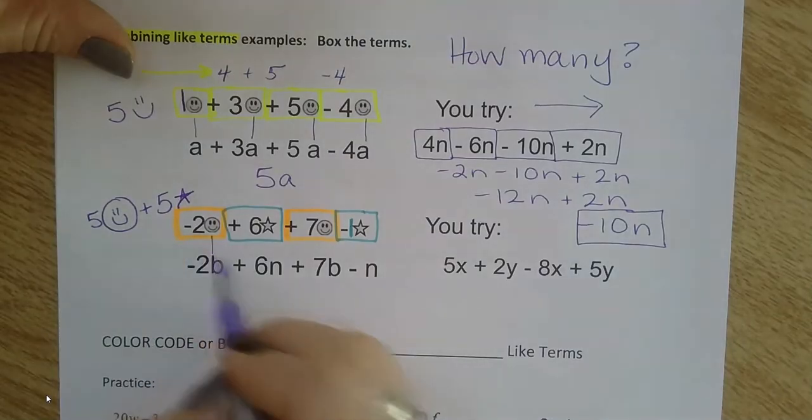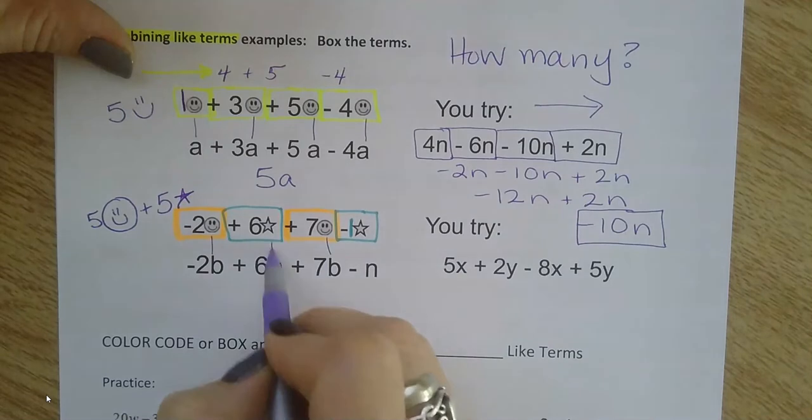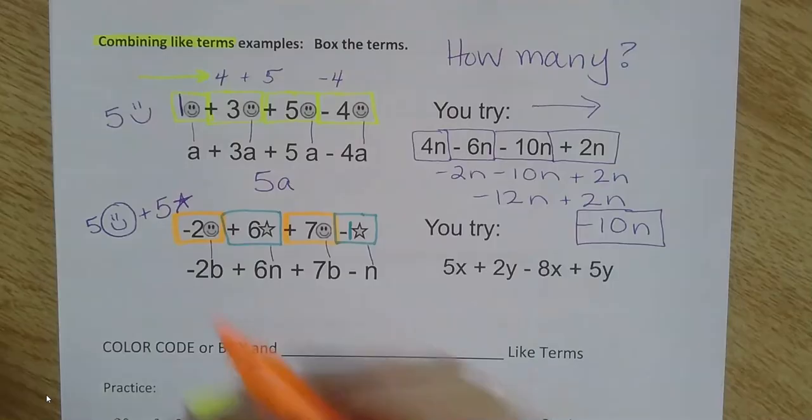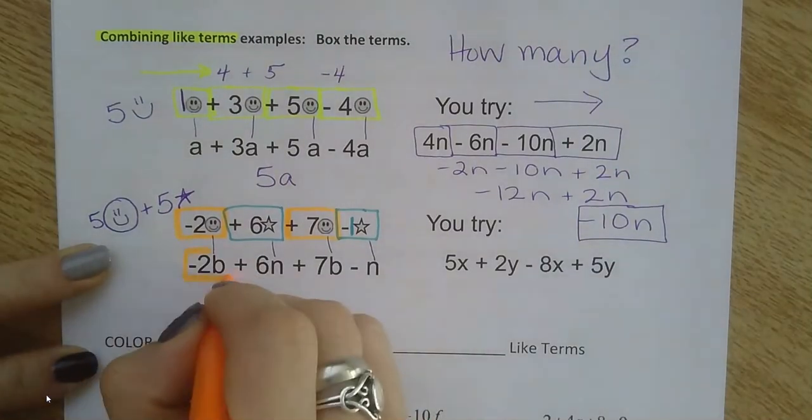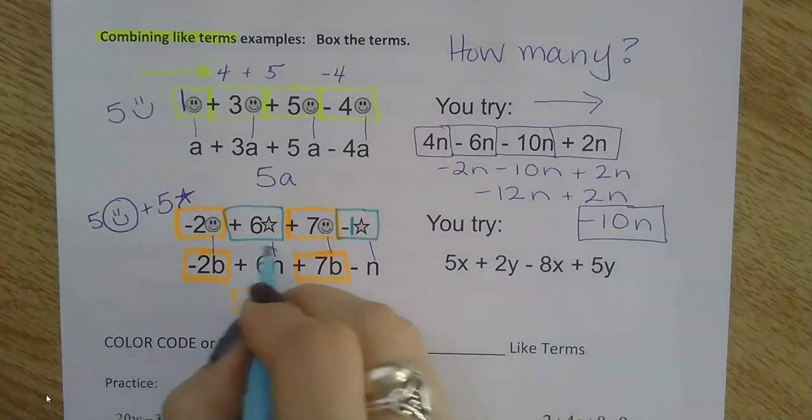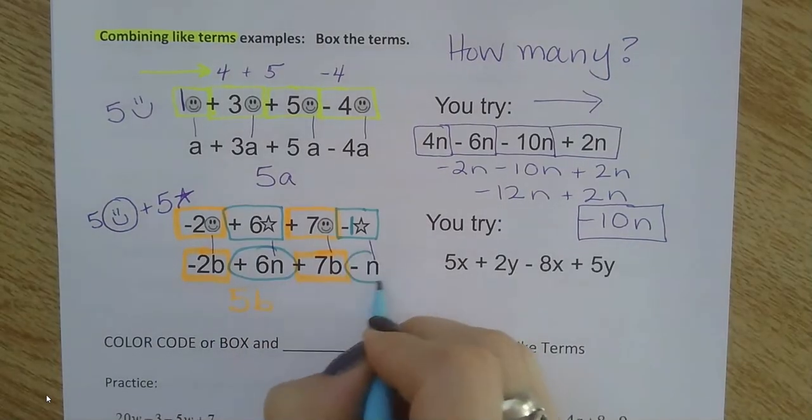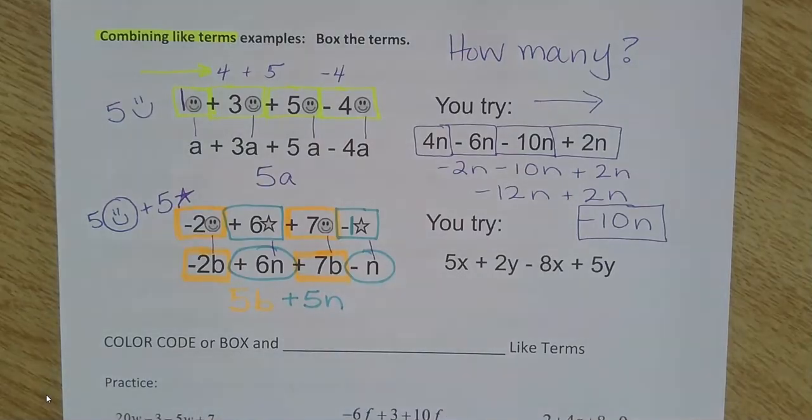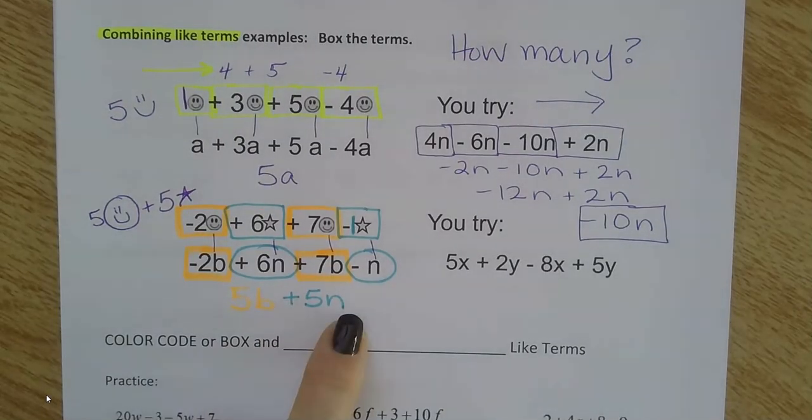Now let's say instead of smiley faces, I have b's, and instead of stars, I have n's. I can do it the exact same way. I can combine negative 2b and 7b, and that makes 5b's. I can combine 6n and negative 1n, and that gives me 5n. So my simplified expression would be 5b plus 5n. We're just finding the things that are alike and counting them up, combining those like terms together.